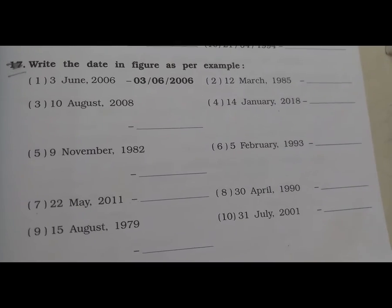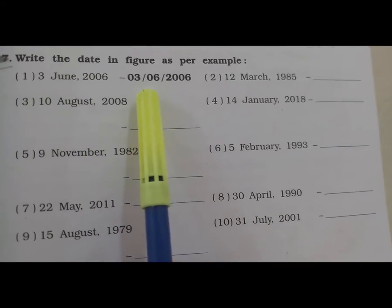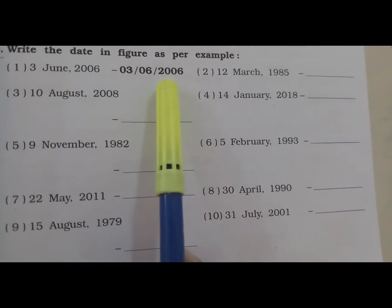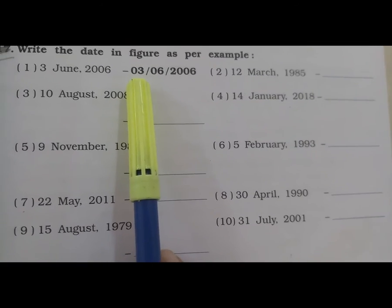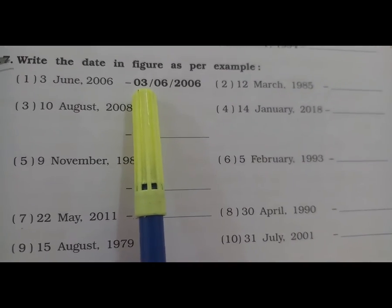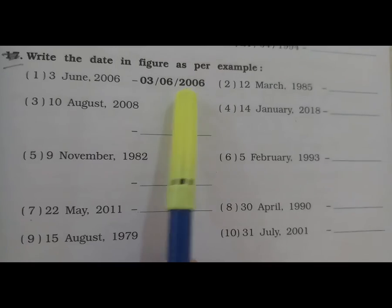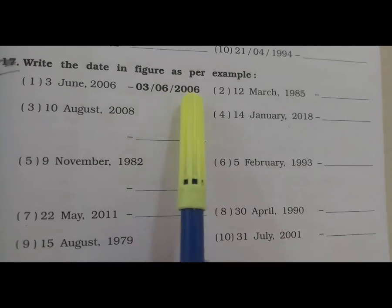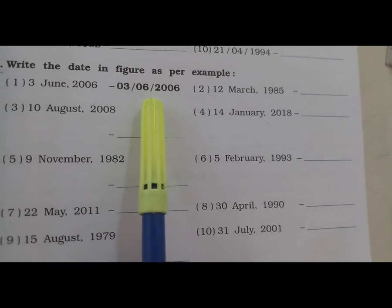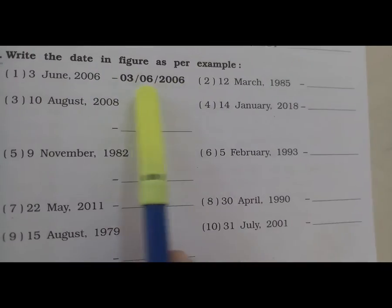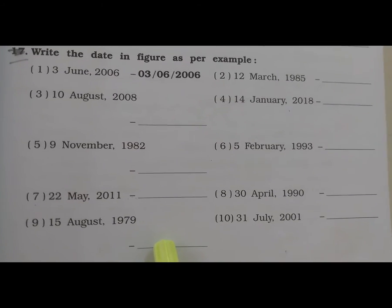Write the date in figures — 1st June 2006. So we have to write here: 01/06/2006. मैंने यहाँ पे 01 क्यों लिखा है — क्योंकि 1 से 9 date में 1 figure होता है, और 10, 11 से लेके 30 या 31 date तक 2 figures होते हैं. इसलिए हमने ऐसे लिखा है. और 6 month में भी 06 लिखा है, क्योंकि 9 month तक 1 figure, 10, 11, 12 में 2 figures. तो इस तरह से date का answer लिखना है. यह है आपका question 5.